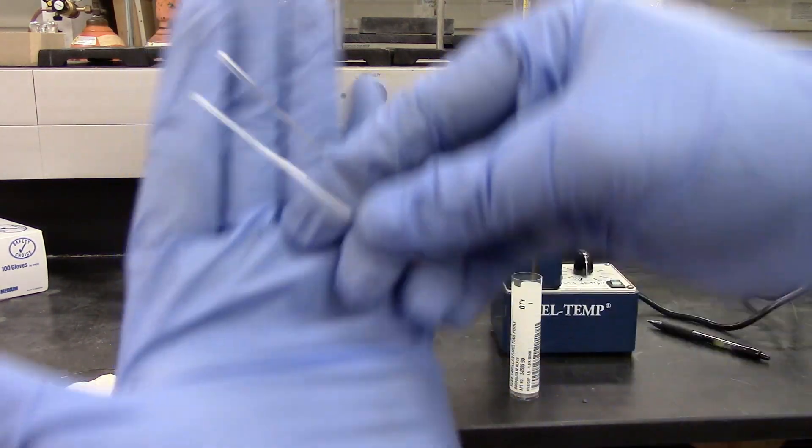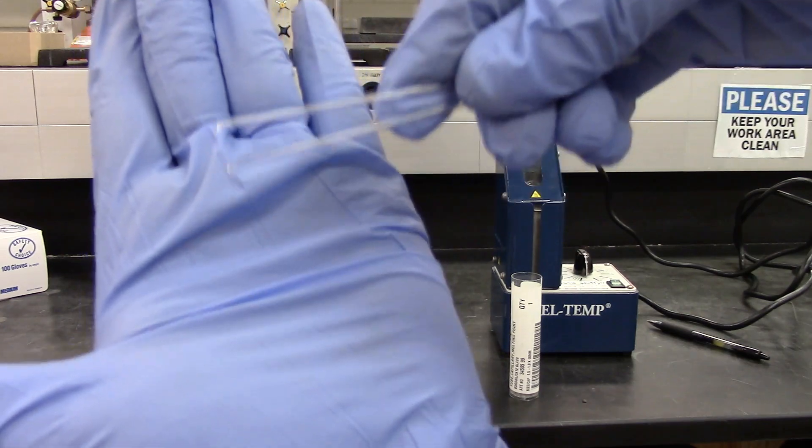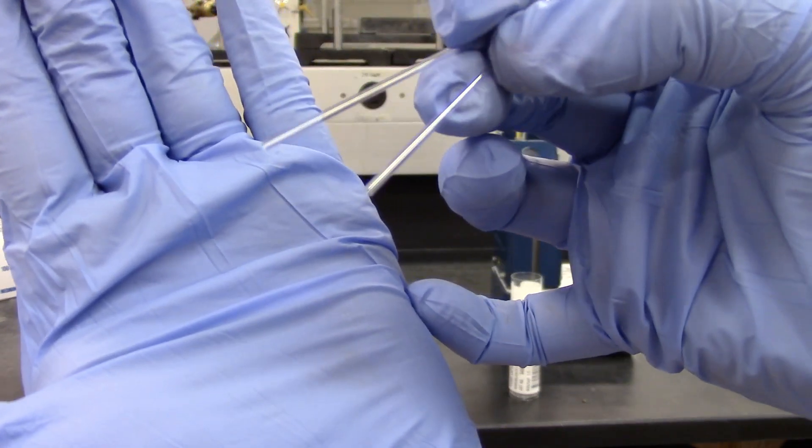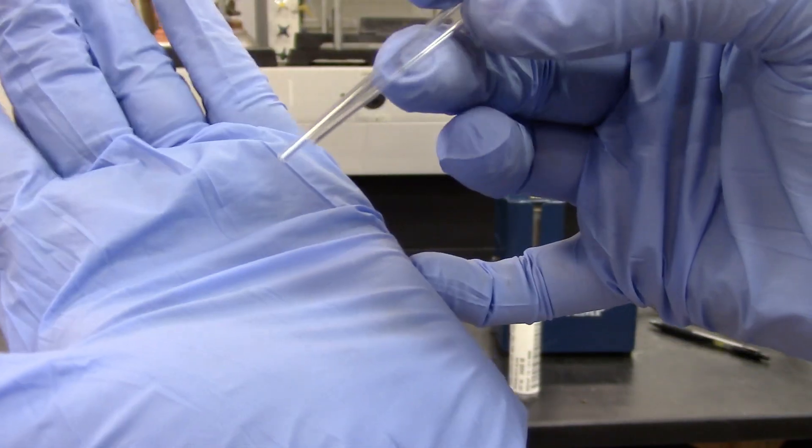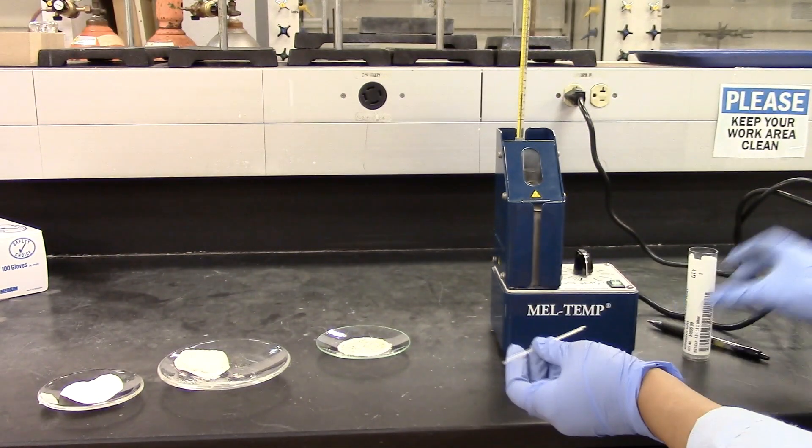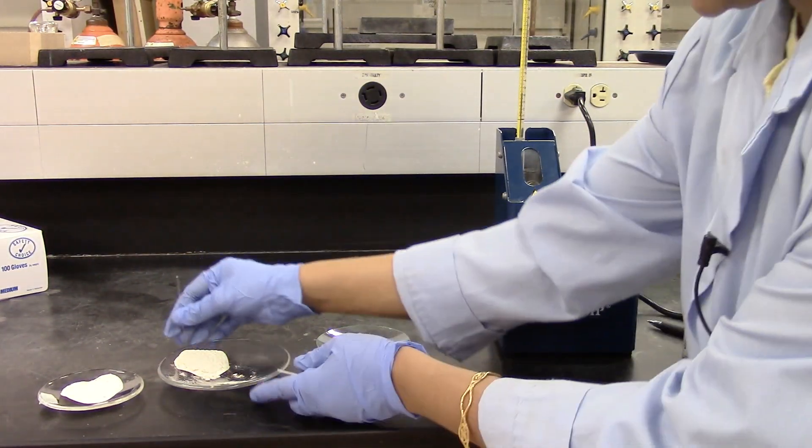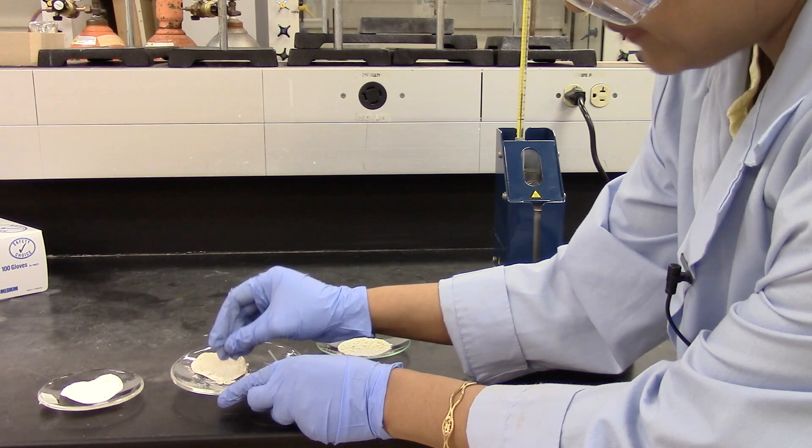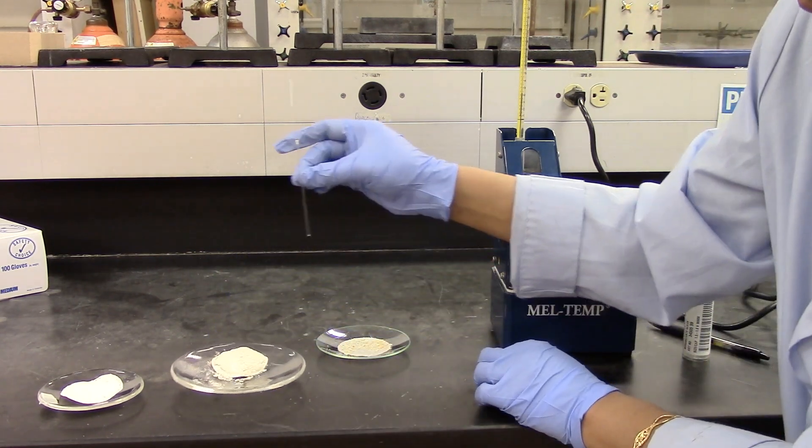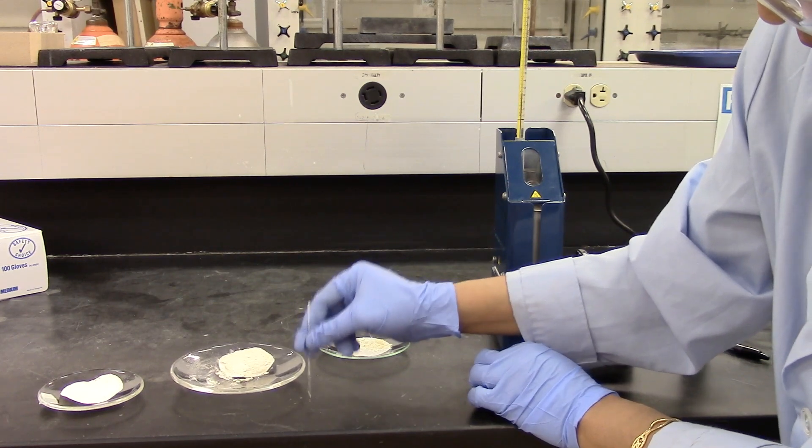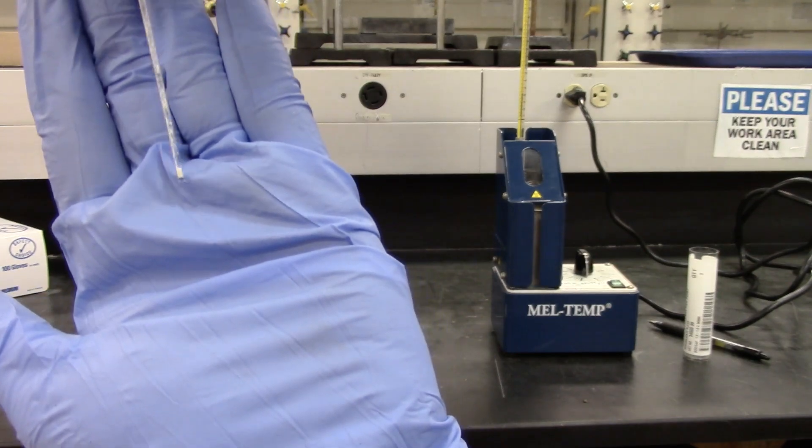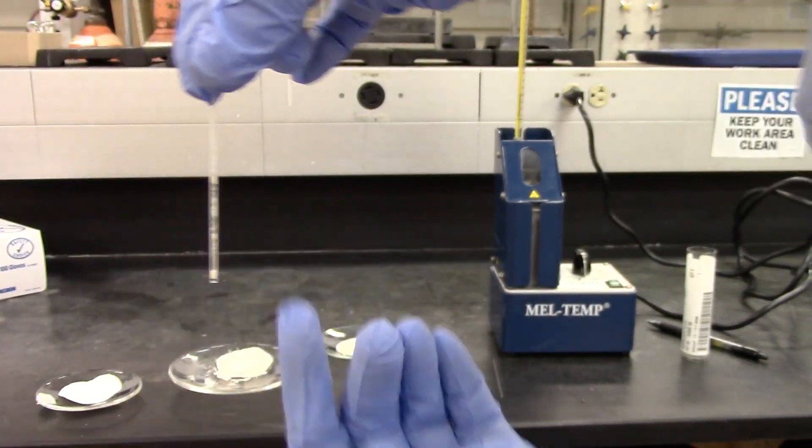If you can see, one end is closed. So that's the closed end. And this end is open. I'm going to tap some product onto this open end. So let's do the acetanilide. Tap some product and then turn it around and tap it down. So now you can see you will have a little bit of product into the capillary. And that's all you want.